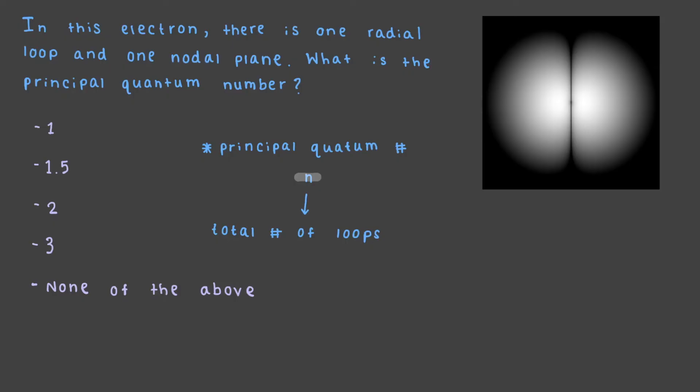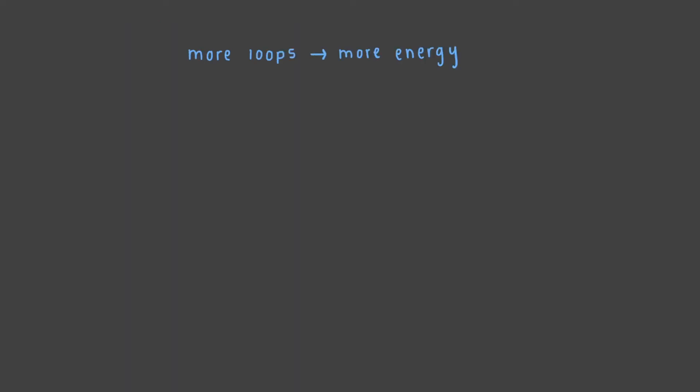The principal quantum number can be determined by adding the number of radial loops and the number of angular loops. And remember, more loops means more energy.